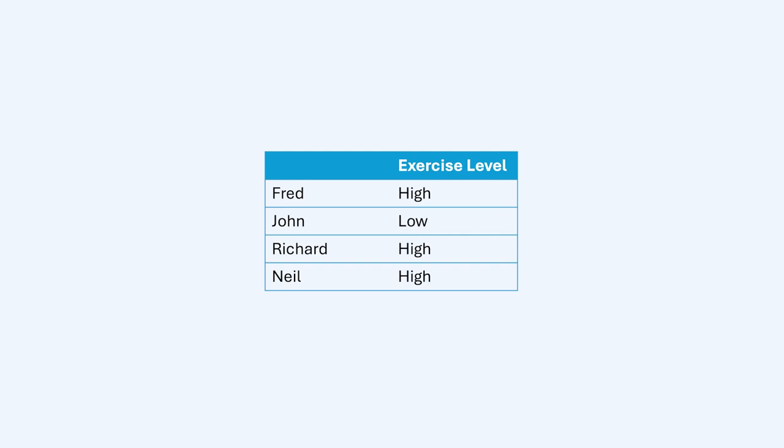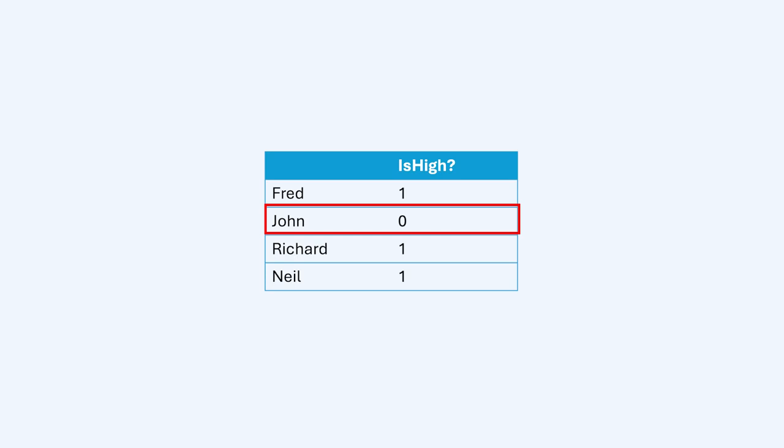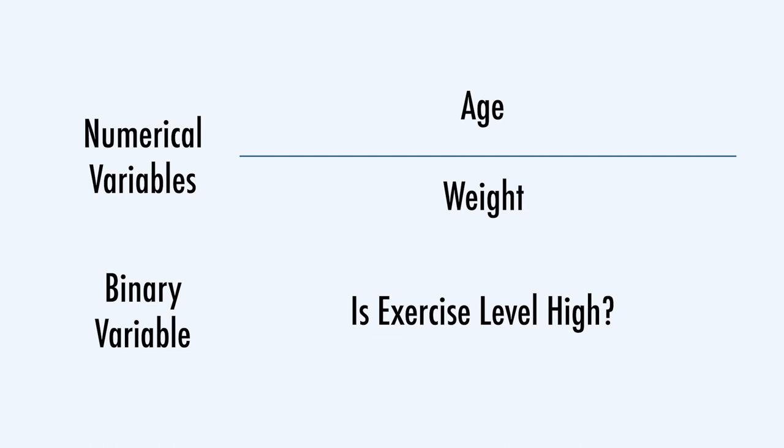In our example we need to create one feature for the categorical feature of exercise level. The binary feature represents the level of exercise. For example, consider John — he is 80 years old and 75 kilos. He has a low level of exercise, so in the column 'level of exercise' John will be 0. If he had a high level of exercise he would be 1. With our three features — two numerical plus a binary — we can perform clustering again.